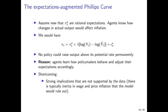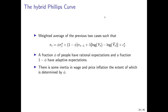To address this, the hybrid Phillips curve formulates inflation as a weighted average of the adaptive and rational expectations cases. A fraction φ of people have rational expectations, and the fraction 1−φ have adaptive expectations. This introduces some inertia in wage and price inflation, with the extent of inertia determined by the relative fractions. One can tune the model to better fit empirical findings and test it against the observed fractions of adaptive versus rational expectation-holders.